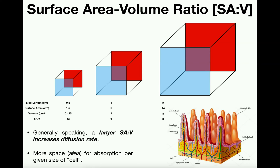Here's the key: a larger surface area to volume ratio increases diffusion rate. To maximize diffusion rate, you need to increase the surface area as much as possible for the given shape or cell. The reason is there's more space or area for absorption of nutrients per the given size of the cell.